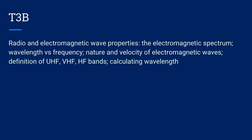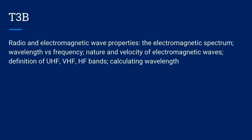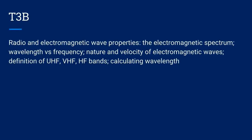T3B: Radio and electromagnetic wave properties. The electromagnetic spectrum, wavelength versus frequency, nature and velocity of electromagnetic waves, definition of UHF, VHF, HF bands, and calculating wavelength.